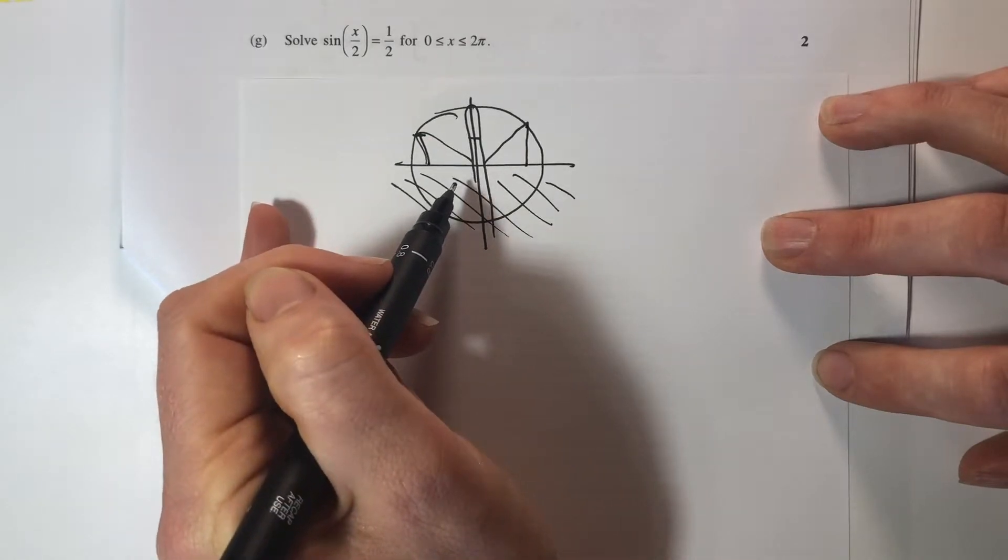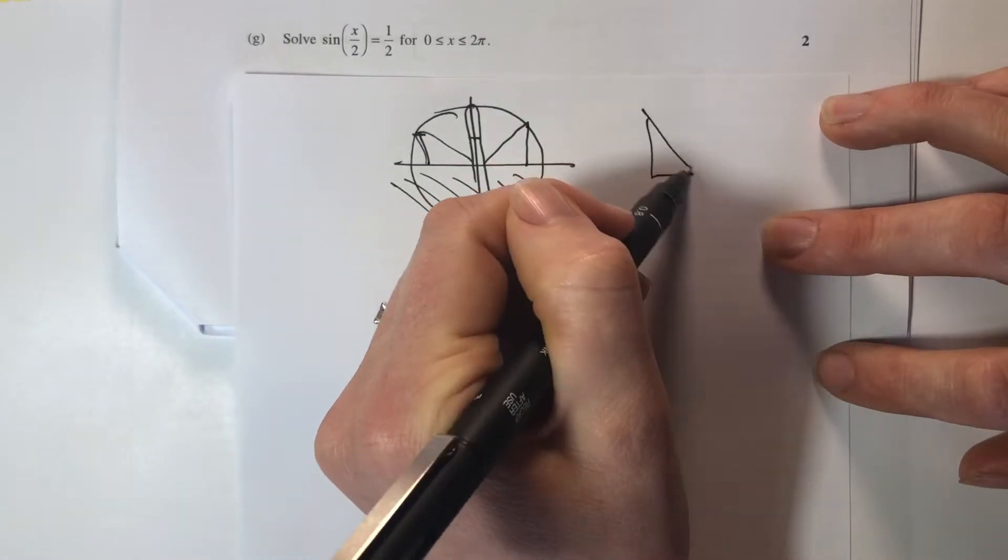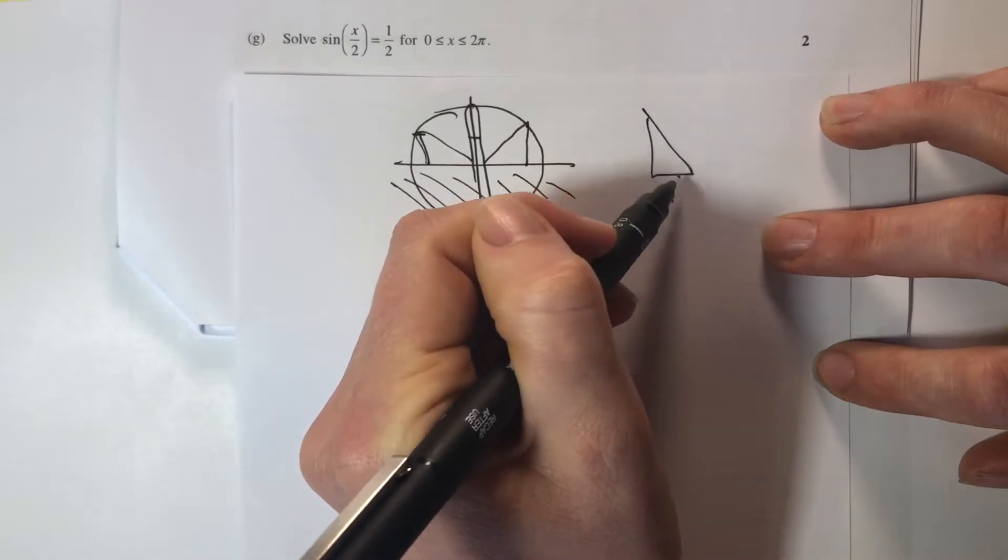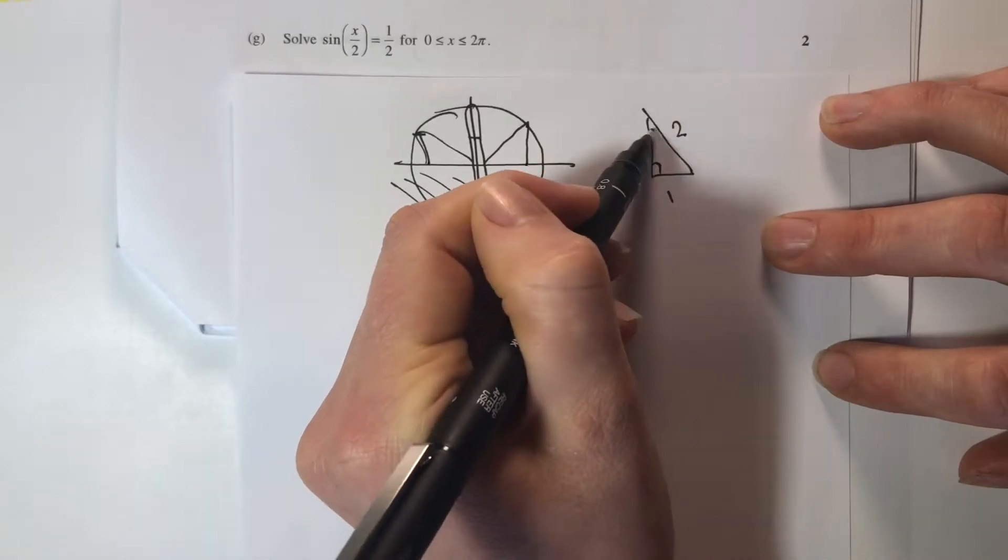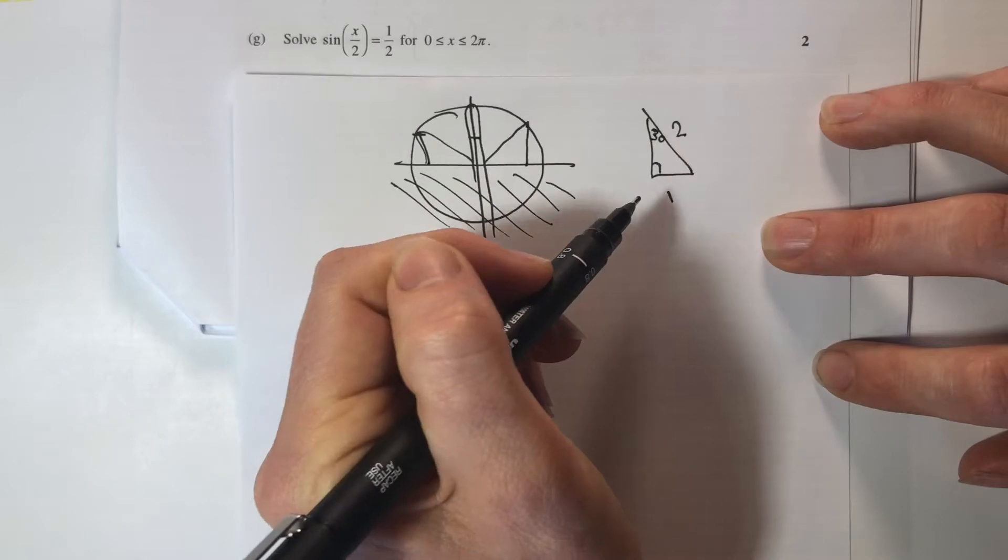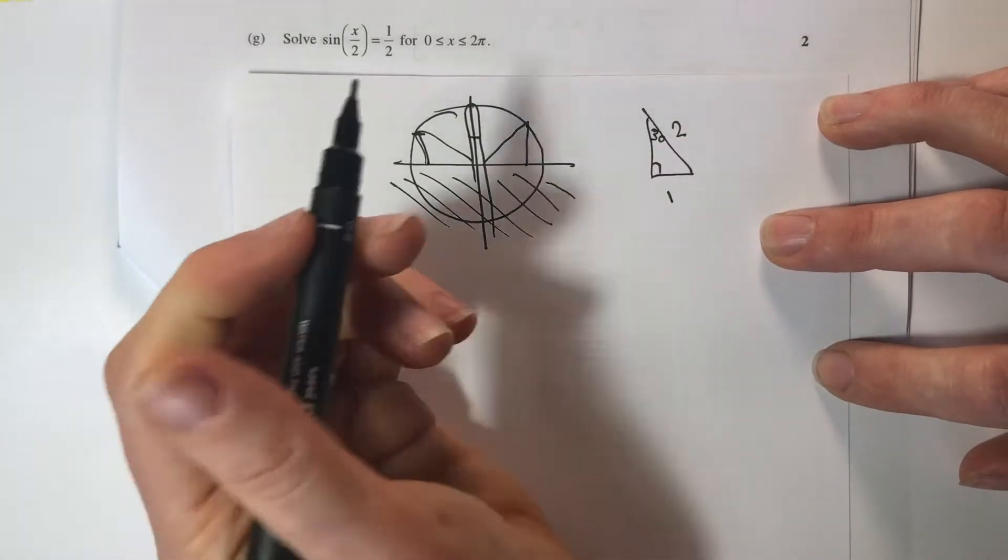Now if I were to reference a half in my exact value triangles, I'd recognize that 30 degrees is going to give me a sine ratio of a half.